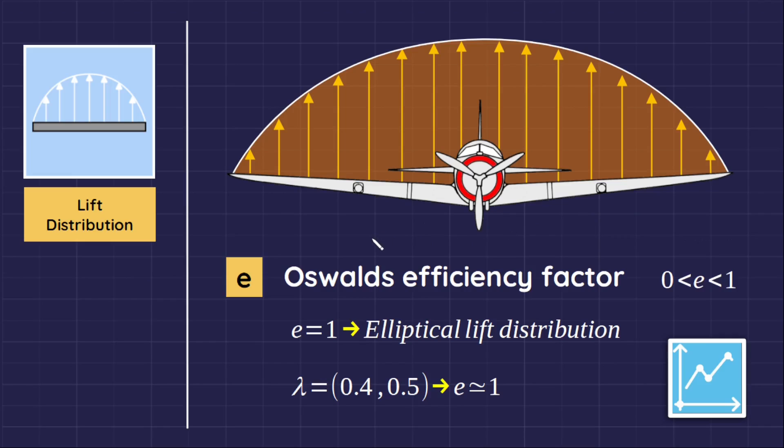The taper ratio improves the wing efficiency by giving a higher Oswald efficiency factor, which is a correction factor that represents the change in drag with lift of a three-dimensional wing or airplane, as compared with an ideal wing having the same aspect ratio and an elliptical lift distribution.